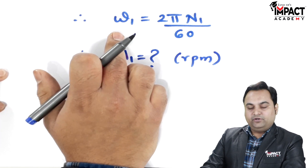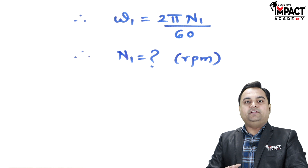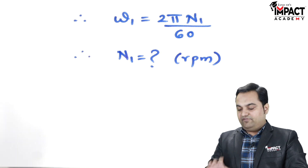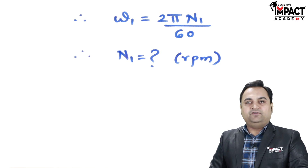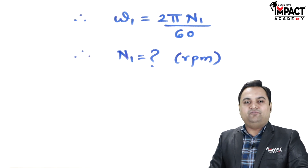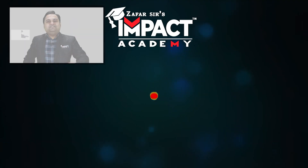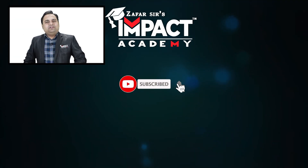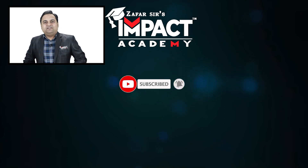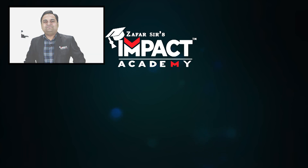In short, this video covered the effect of friction on the maximum and minimum equilibrium speed for the Porter governor. If you find my videos helpful, please like, share, comment, and subscribe to the channel and share it with your family and friends. Thanks for watching.